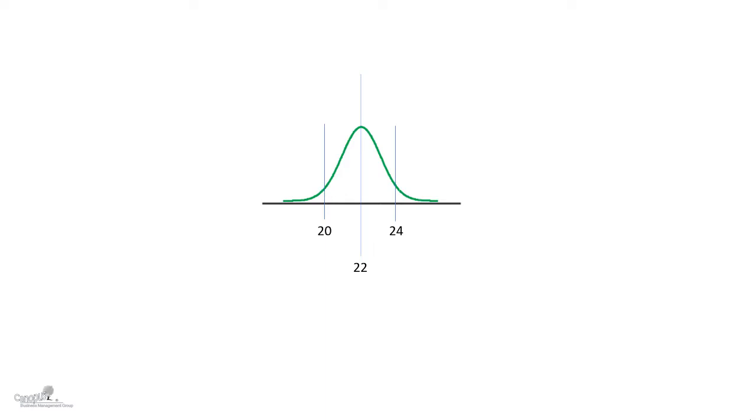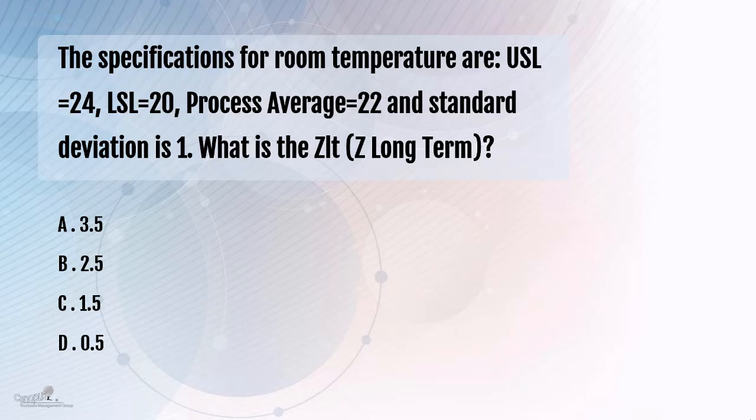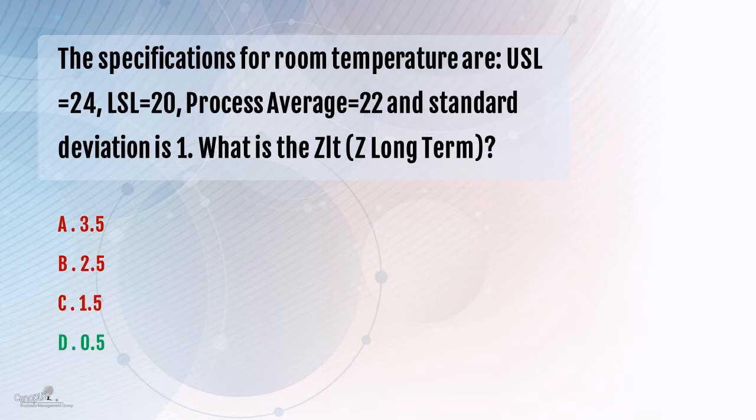Now that translates into a Z value of 2. But that's the short-term process capability. As you must already know, the long-term process capability is 1.5 units less than that of the short-term process capability. As the short-term process capability as we just evaluated is going to be 2, so 2 minus 1.5 would be 0.5.